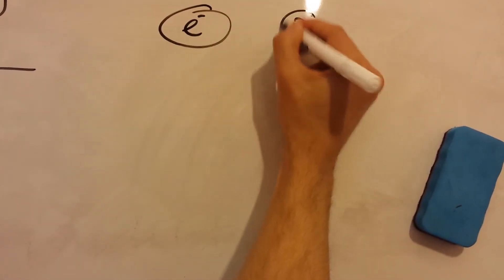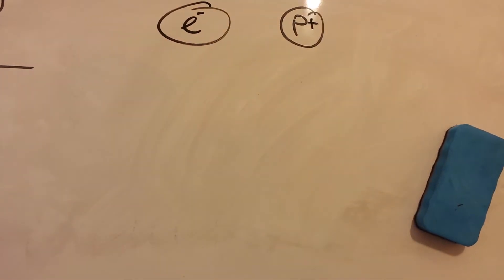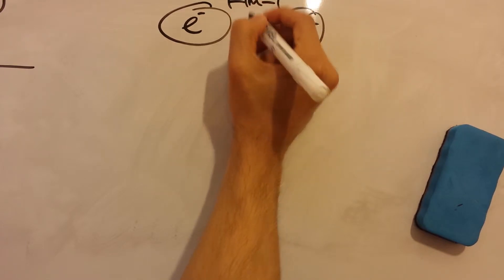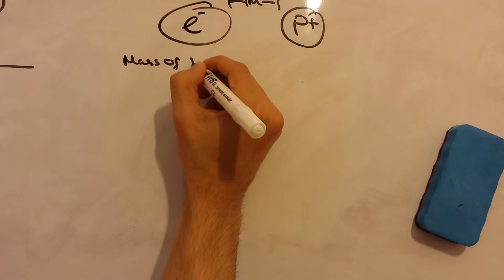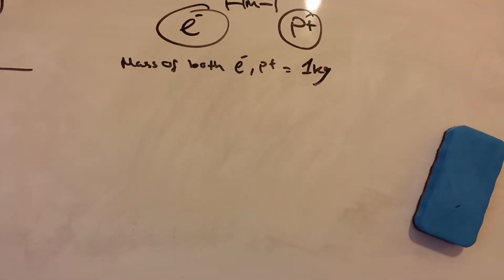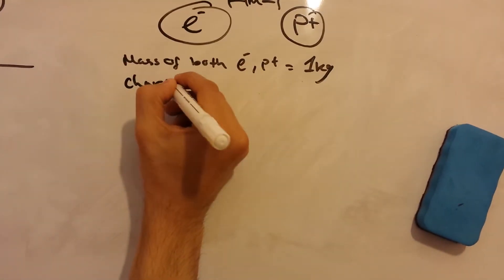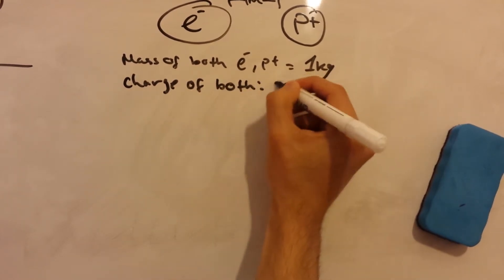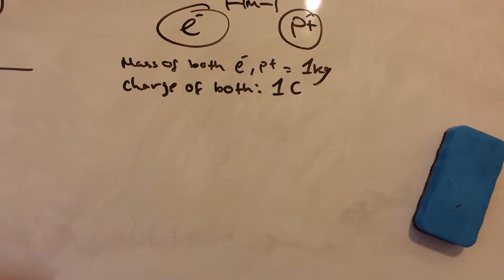Now that we know the differences and the similarities between the gravitational force and the electric force, let's find out the differences in their strength. Suppose we have an electron and a proton — the proton positively charged — and imagine they are one meter away from each other. Let's say the mass of both the electron and the proton is one kilogram, to make the math easy, and let's say the charge of both of them is one Coulomb. What will be the electric force and the gravitational force between them?